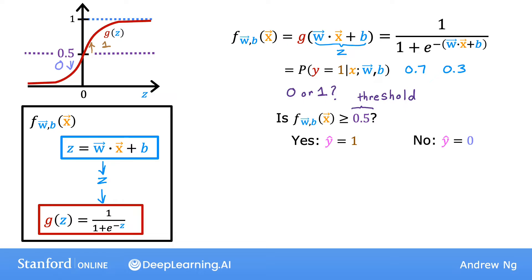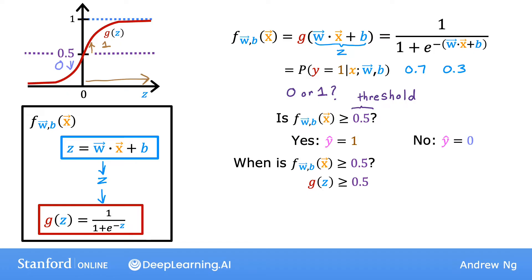Let's dive deeper into when the model would predict 1 — in other words, when is f of x greater than or equal to 0.5? Since f of x equals g of z, f is greater than or equal to 0.5 whenever g of z is greater than or equal to 0.5. Looking at the sigmoid function, g of z is greater than or equal to 0.5 whenever z is greater than or equal to 0 — that is, whenever z is on the right half of the axis. And z is greater than or equal to 0 whenever w dot x plus b is greater than or equal to 0.